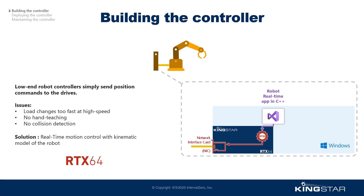Therefore, one of the most important pieces to build a new generation of powerful arm robot controllers is to have real-time motion control with the kinematic model of your robot. The Kingstar platform provides you this capability to develop real-time motion control. Kingstar Motion provides PLC Open motion control libraries in C and C++ and is based on RTX 64, our real-time solution for Windows.